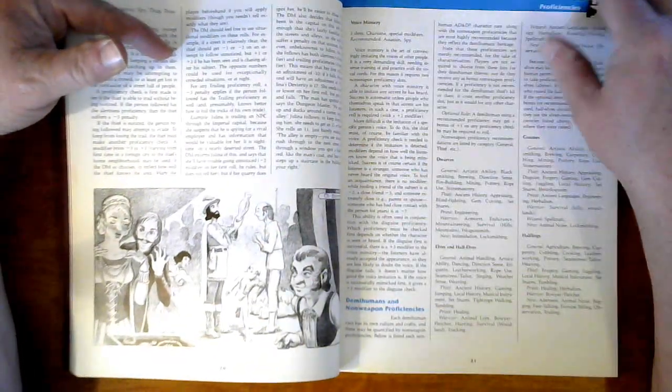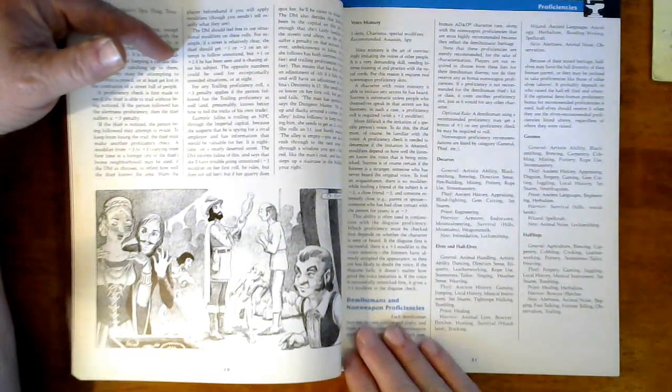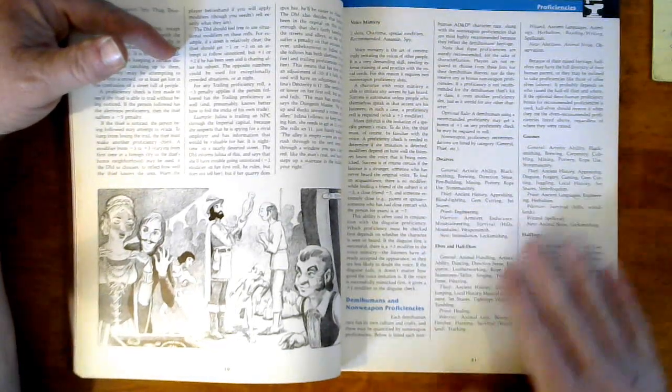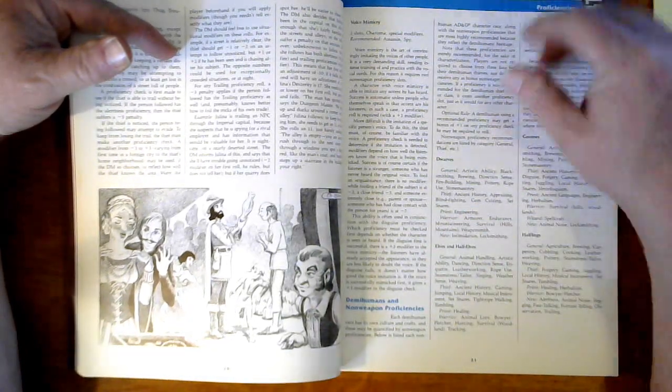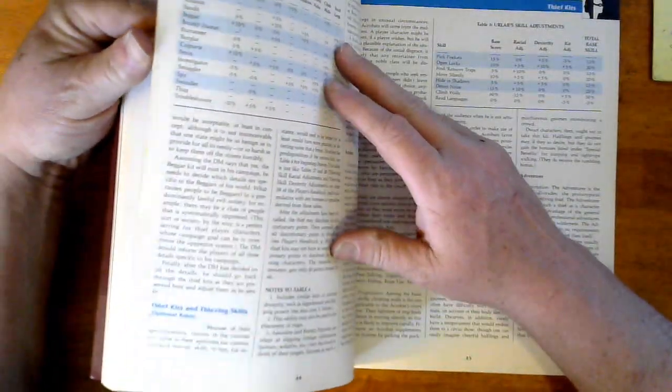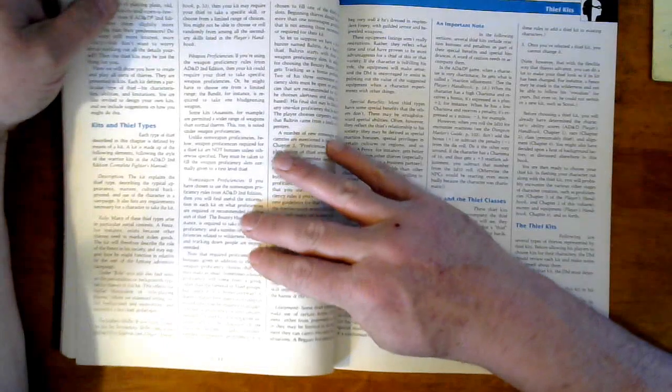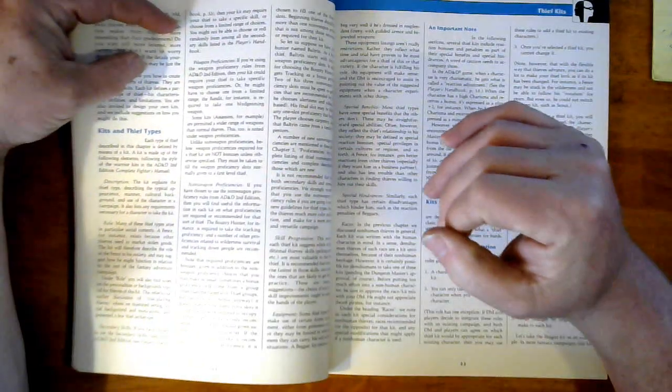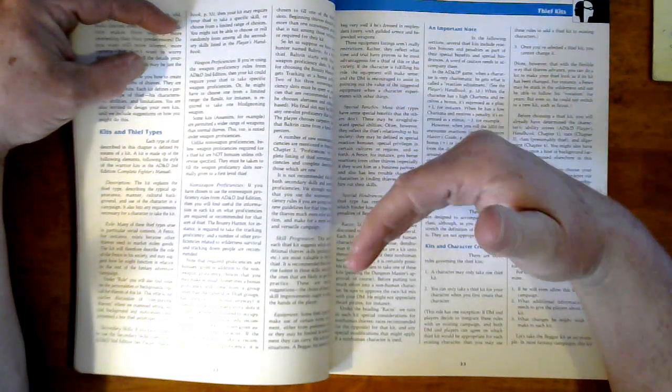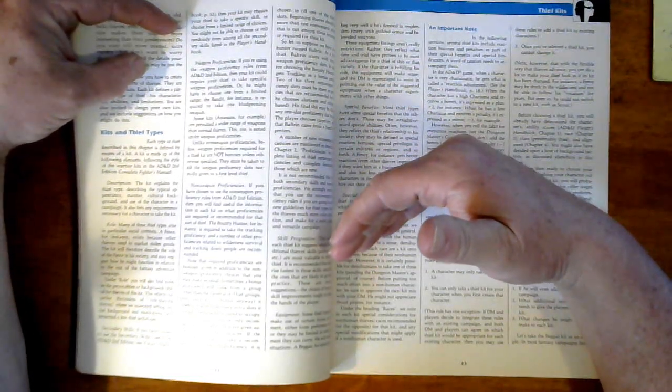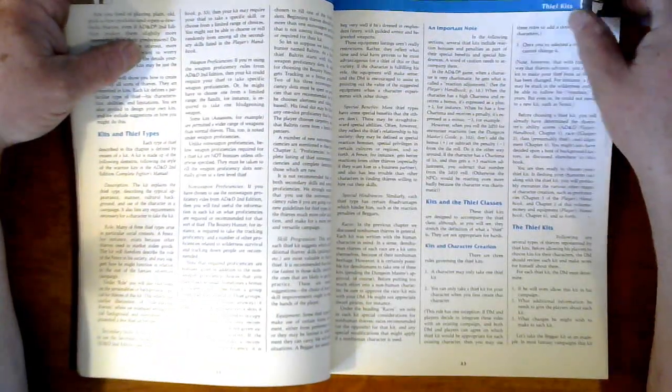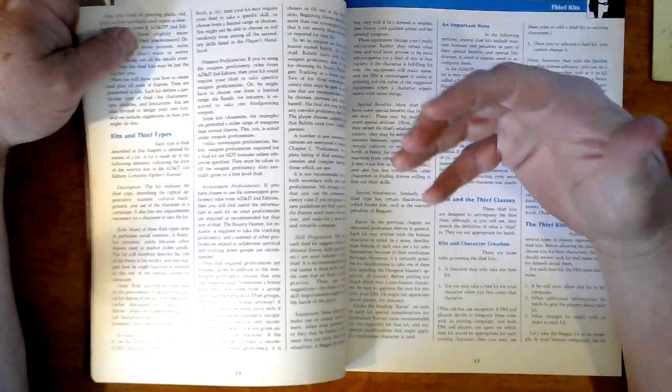Other proficiencies include looting, intimidation, locksmithing, herbalism, information gathering, reading and writing, tracking, trailing, voice mimicry, et cetera. Then we have demi-humans and non-weapon proficiency. It gives all the various races that were normal for the gameplay at the time - what they're doing, what they can benefit from, or what they should apply. There's a caveat saying just because they're there doesn't mean your dwarf can't have proficiencies from a different category.